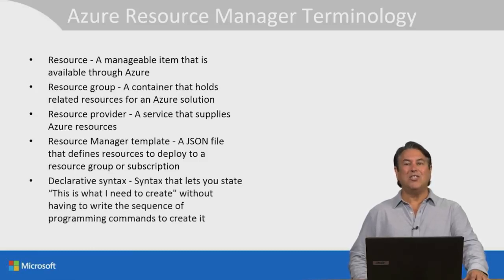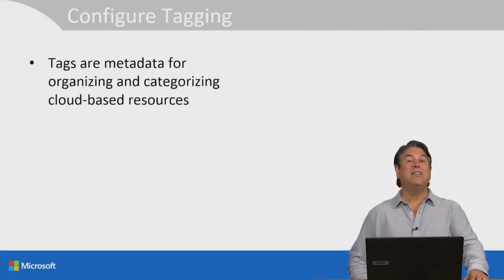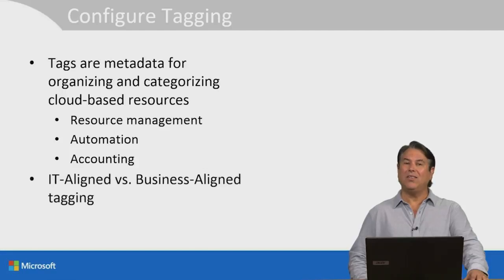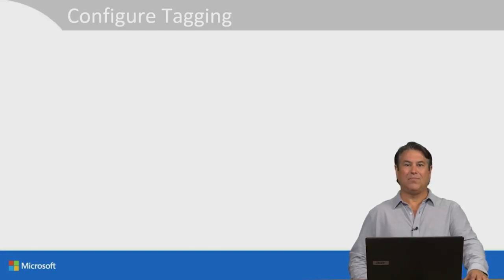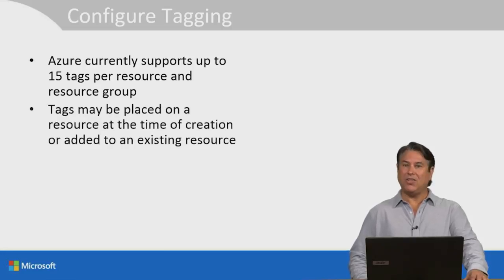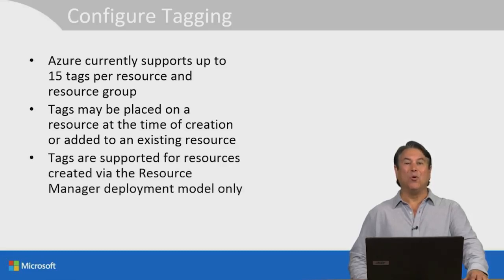A resource manager template is a JSON file that defines resources to deploy to a resource group or a subscription. Then we have declarative syntax — syntax that lets you state 'this is what I need to create' without having to write the sequence of programming commands in order to create it. Tags are metadata for organizing and categorizing cloud-based resources. You can use tags for resource management, automation, and accounting. Your tags can be IT-aligned or business-aligned. Azure currently supports up to 15 tags per resource and resource group. Tags are supported for resources created via the resource manager deployment model only.